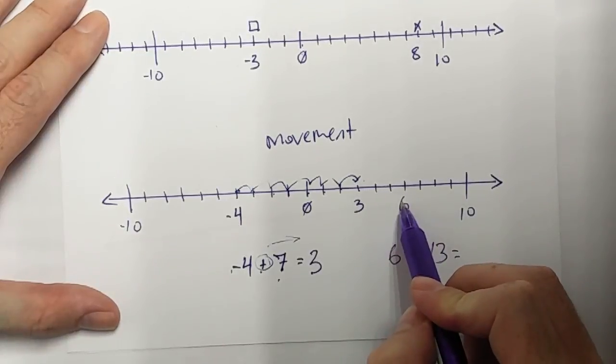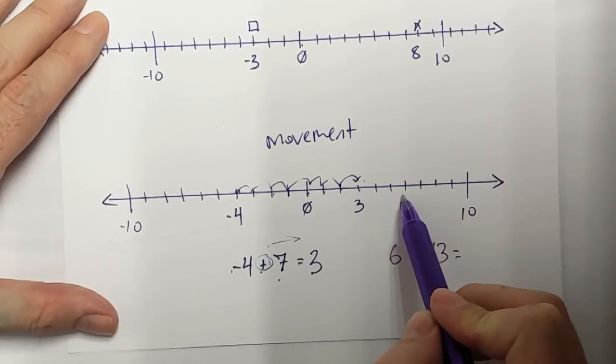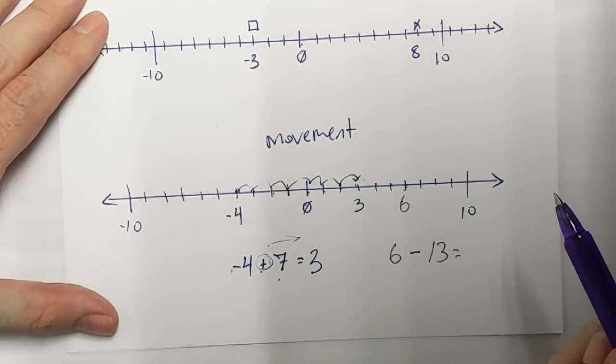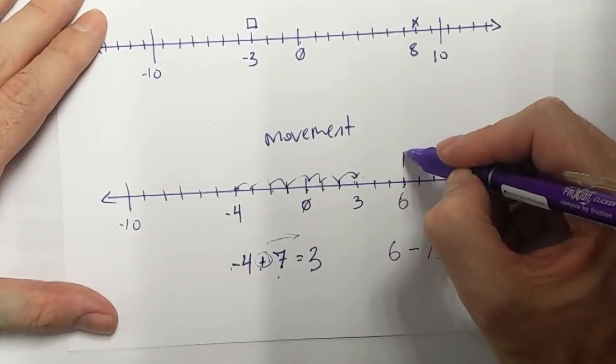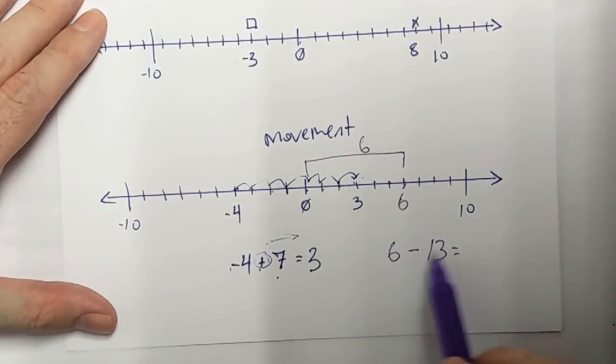Alright, well here I am at 6. And how many do I need to go? Well, let's do a shortcut. I don't want to have to count down 1, 2, 3, 4 every single time. I know that 6 to 0, that's a difference of 6. But how far do I have to go?